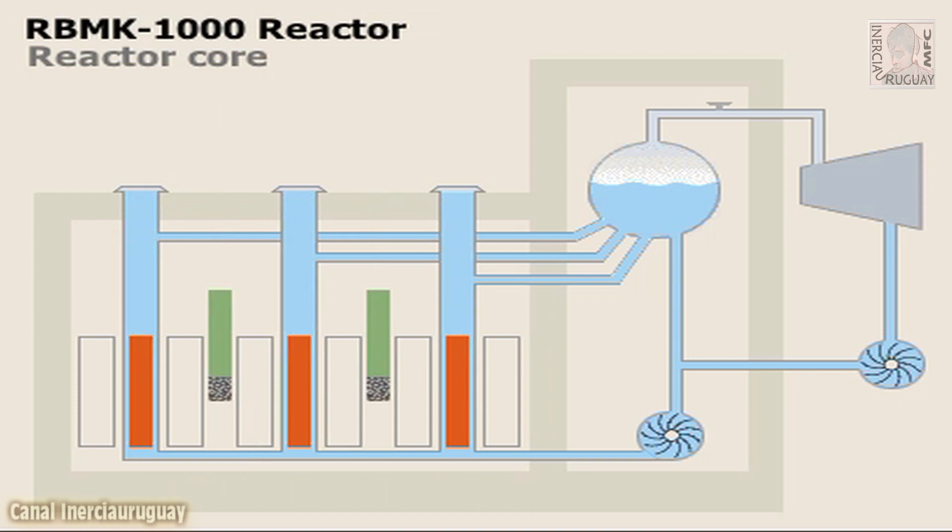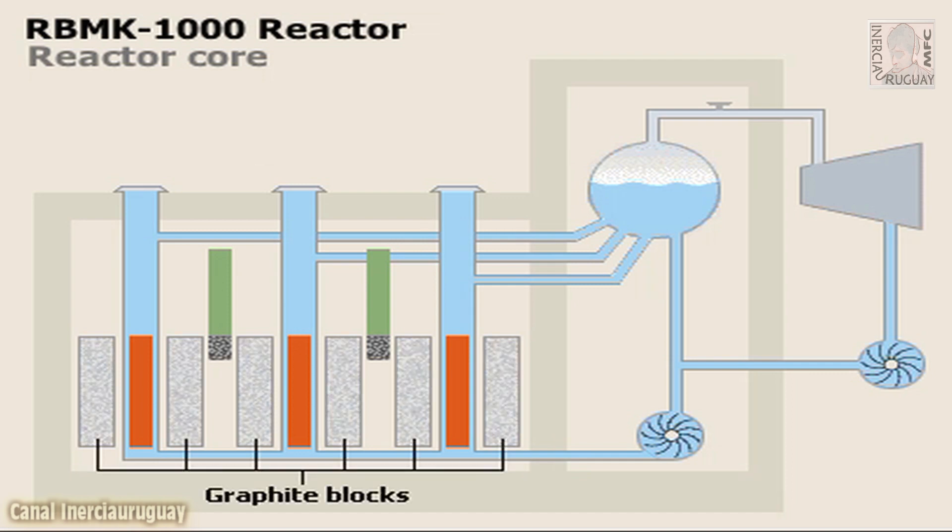Clusters of control rods were lowered into the core to slow the reaction or raised to increase it. These rods had tips made of graphite, which caused the reaction to increase slightly as they entered the core. Graphite blocks placed between the fuel rods were also used to moderate the nuclear reaction.